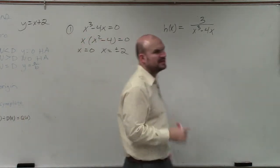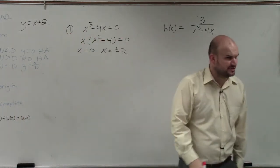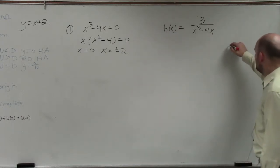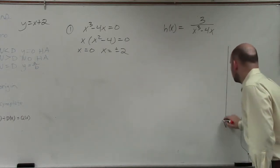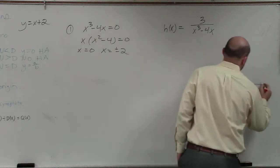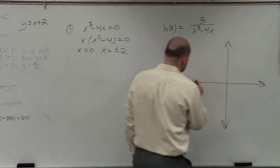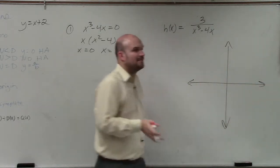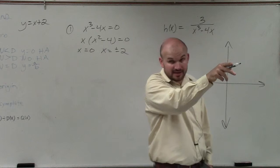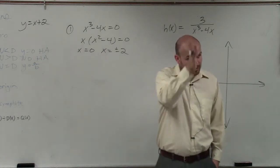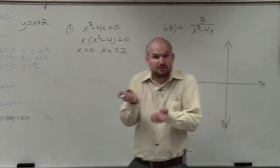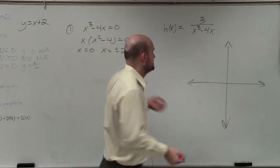Does everybody agree that x equals plus or minus 2? So your asymptotes, if you remember, are going to be your dotted lines. Remember we talked about those in discontinuity? Those are going to be the lines that your graph is not going to be continuous on.